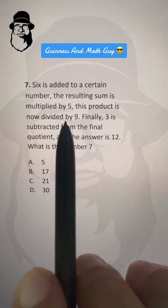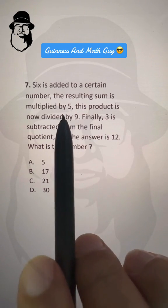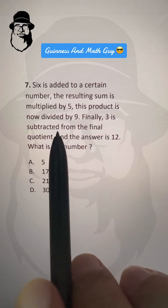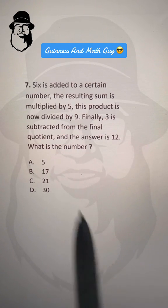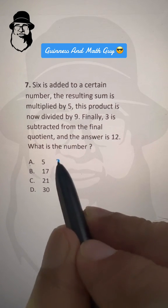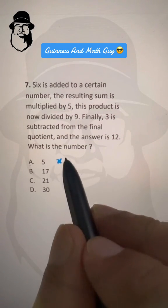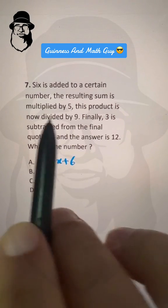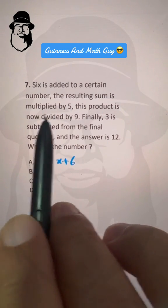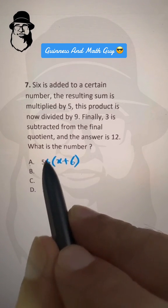6 is added to a certain number. The resulting sum is multiplied by 5. This product is now divided by 9. Let's take x as that number. 6 is added to that number. The resulting sum is multiplied by 5, so this is multiplied by 5.